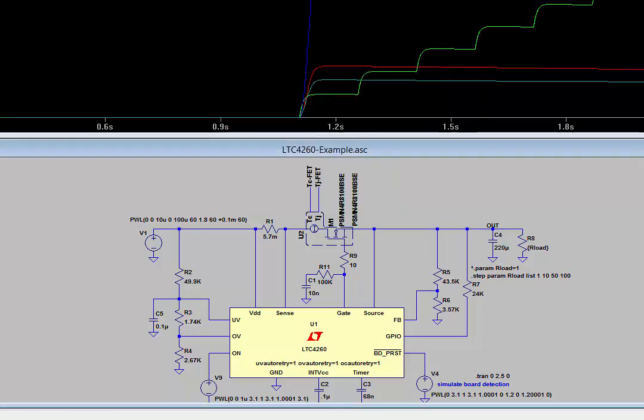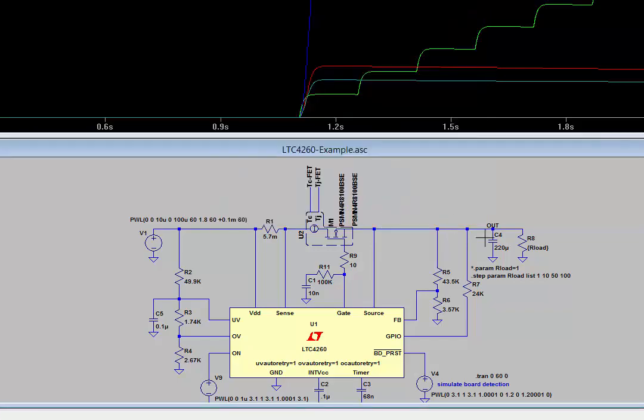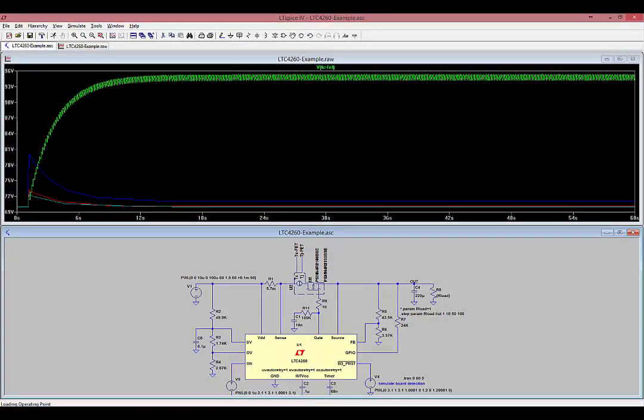Click OK. And now that we're back in the main schematic, right-click on the .trans statement, and change the stop time from 2.5 seconds to 60 seconds. Click OK, and then run this simulation. This time, the TCFET node, which is case temperature, rises to 25 degrees C above ambient. Since the MOSFET's dissipating an average of 2.5 watts, and the THETAJA is equal to 10 degrees C per watt, this makes sense.